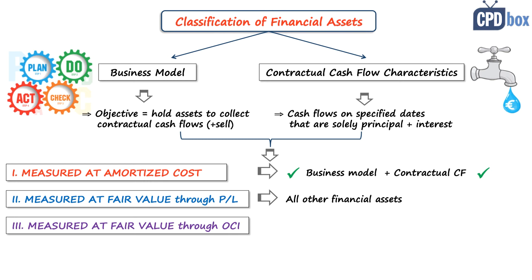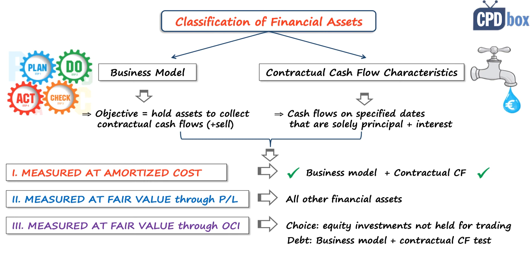IFRS 9 also offers a third category: financial assets measured at fair value through other comprehensive income. When an entity acquires equity investments like shares not held for trading, on initial recognition the entity may make an irrevocable choice to present all gains or losses from subsequent measurement in other comprehensive income. Also, when debt instruments are held not only for collection of contractual cash flows but also for selling — and the contractual cash flows test is met — these debt instruments are measured mandatorily at fair value through other comprehensive income, unless you choose the fair value through profit or loss option.